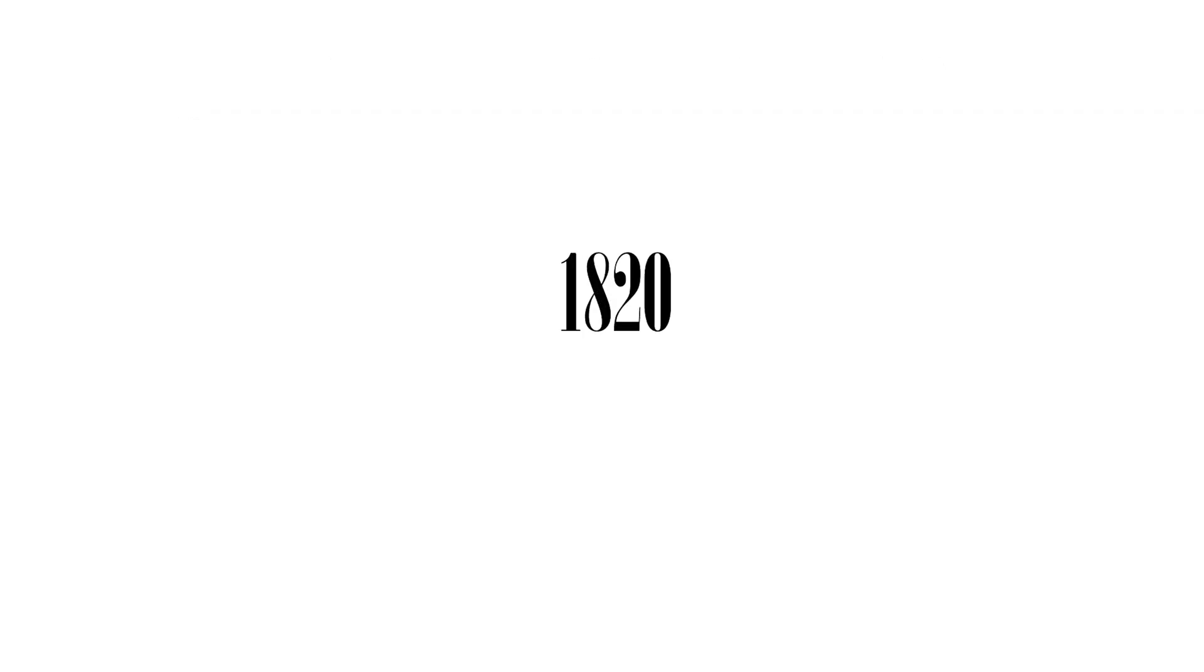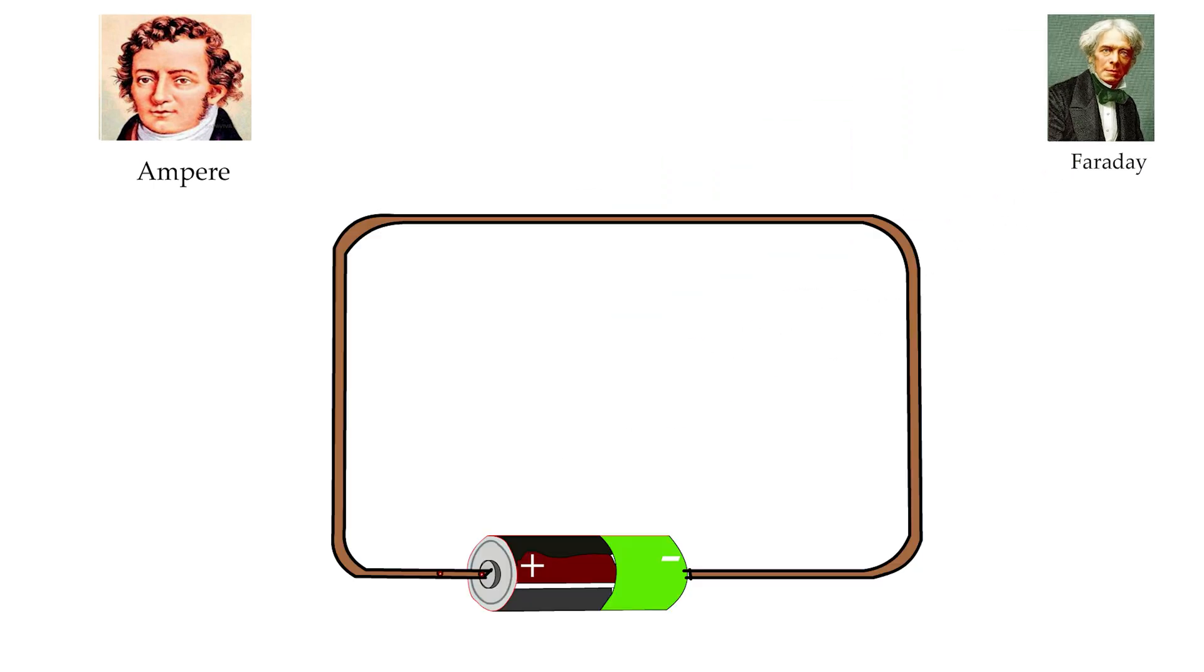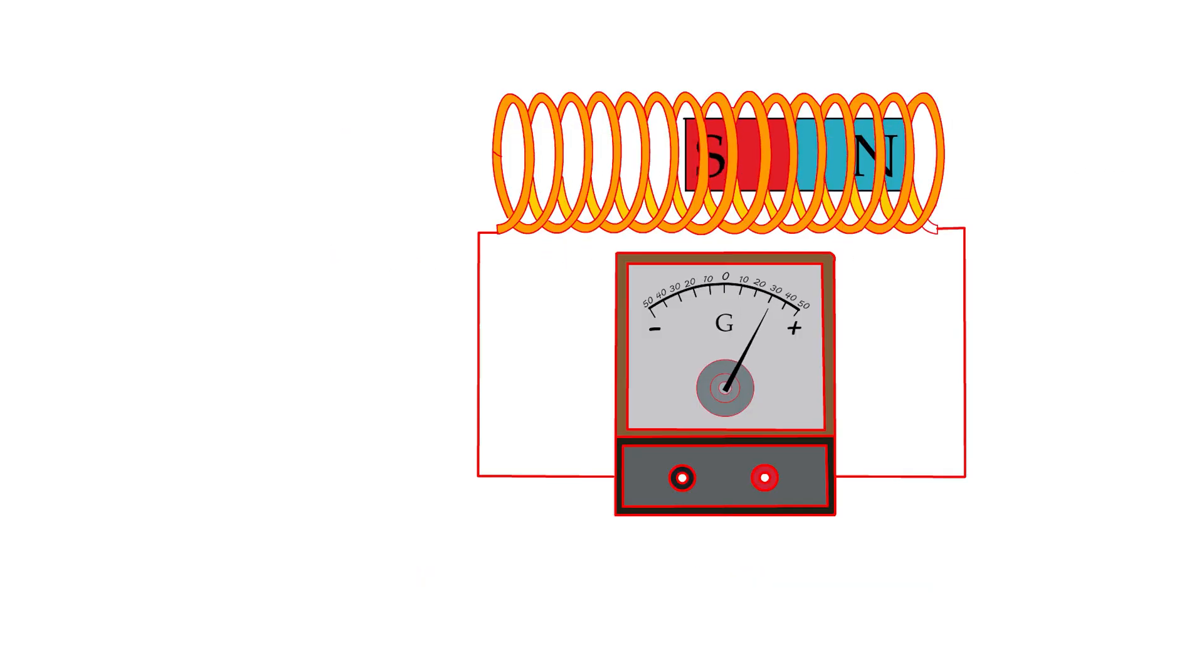In 1820, Danish scientist Ersted found that a compass needle is deflected by passing an electric current through a wire placed near the needle. Ampere and Faraday supported this observation by saying that electric charges in motion produce magnetic fields and moving magnets generate electricity.